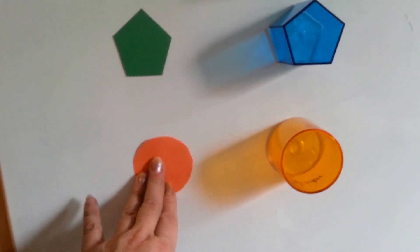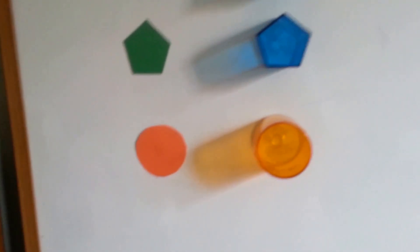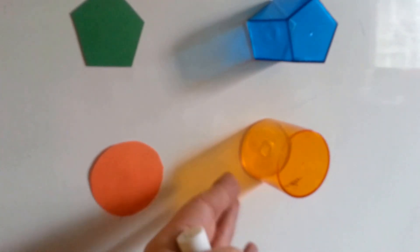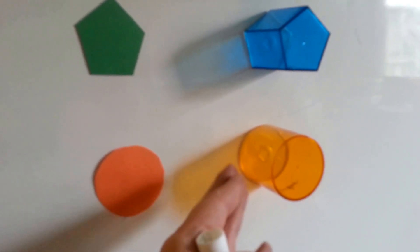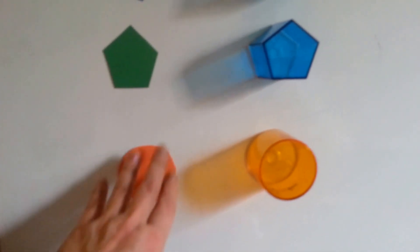And this circle is the same size as this circle, except this one is three-dimensional because it has height coming away from the board and it's casting a shadow. Where this one doesn't. It's flat.